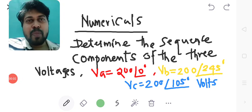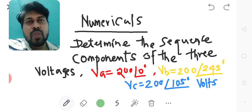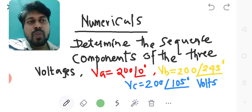Hello guys, welcome to my YouTube channel Learn to Earn for Life. In this video, we will solve one numerical: determine the sequence components of three voltages. VA equals 200 at angle 0°, VB equals 200 at angle 45°, and VC equals 200 at angle 105°.